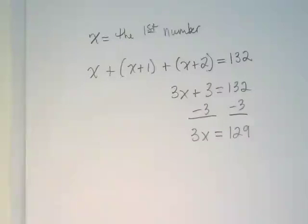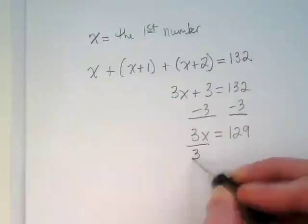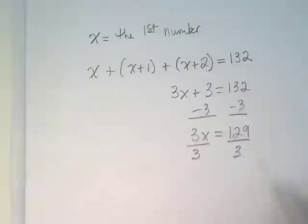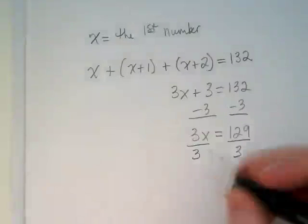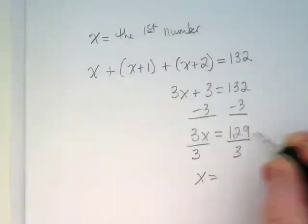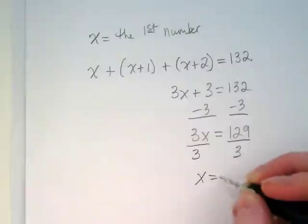And I know we don't have calculators all out there, so I'll tell you what it is. We're going to divide by 3. Every time we have a fraction that the numerator and denominator is the same, it's equal to 1. 1 times X is X. 129 divided by 3 is 43.